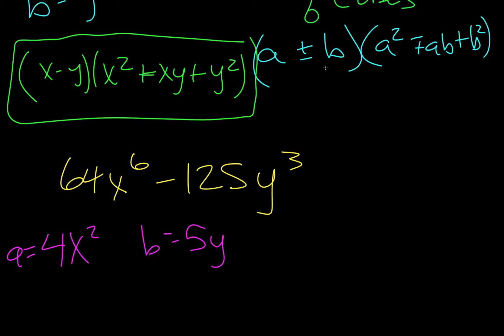Okay. So we do this. Once again, it's a minus sign, so we're going to follow the bottom. So we write down a, 4x squared, minus, and we write down our b, 5y. So that's the first group of parentheses up here.